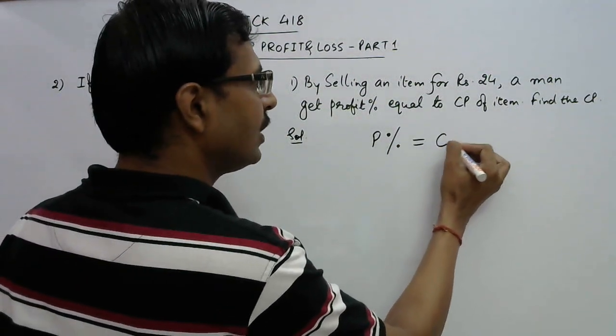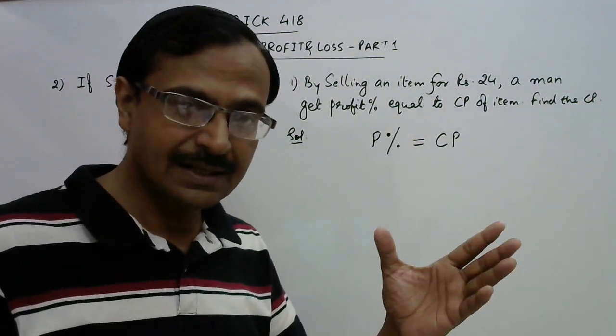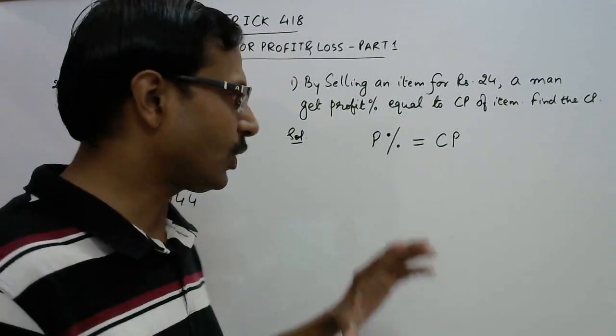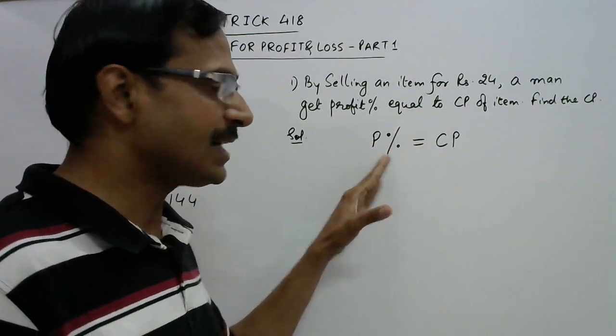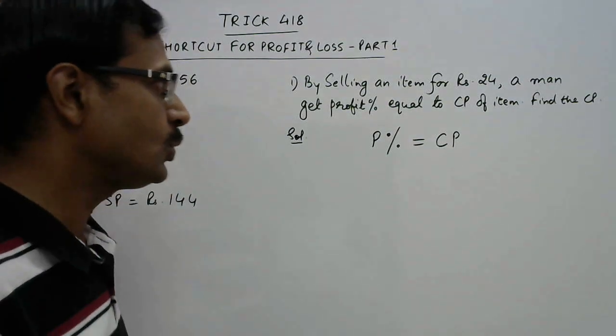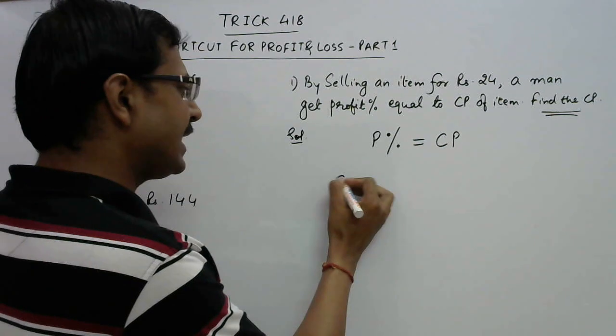Like if the cost price of the item is rupees 10 then the person is getting 10 percent profit, or if the cost price of the item is rupees 65 then the person is getting 65 percent profit. So both are equal. Now we need to find the cost price.